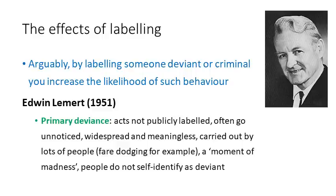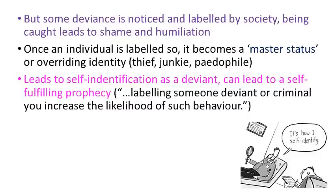We need to consider the effects of labelling. Arguably, by labelling someone deviant or criminal, you increase the likelihood of such behaviour — this is the self-fulfilling prophecy. Edwin Lemert did some work on this area and identifies two types of deviants. Firstly, primary deviants: acts which are not publicly labelled, often go unnoticed, are widespread and fairly meaningless, and carried out by lots of people. A good example could be fare dodging on a train, dropping litter, or urinating in public. Most people in our society have probably engaged in one of those behaviours at least once, but often see it as a moment of madness, and as a result society does not label that person and the person does not self-identify as a criminal or deviant.